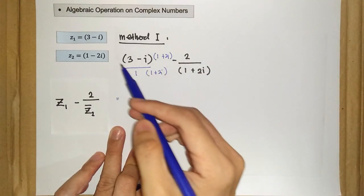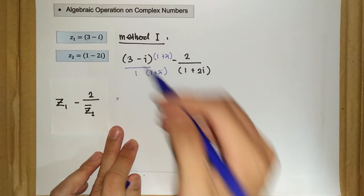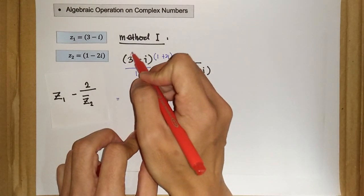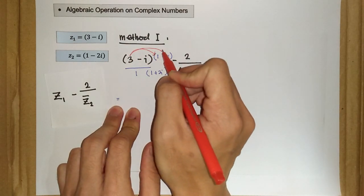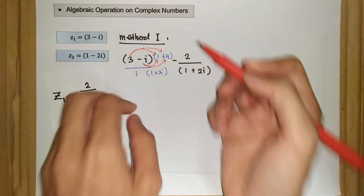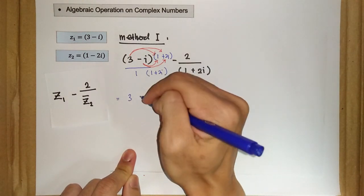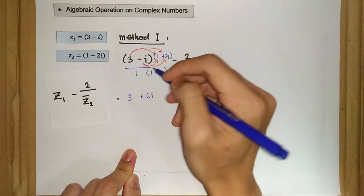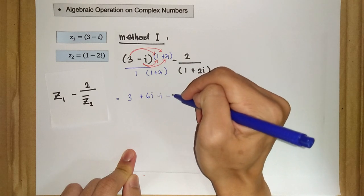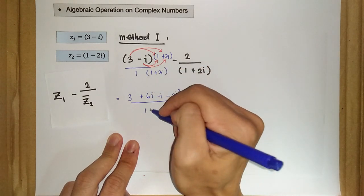We apply the distributive law of multiplication. So we have 3 times 1, then 3 times 2i, followed by negative i times 1, and negative i times positive 2i. This gives us 3, plus 6i, minus i, minus 2i squared — all over 1 plus 2i. For the second term, we carry through minus 2 over 1 plus 2i.